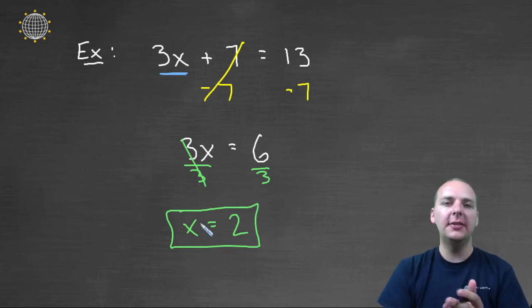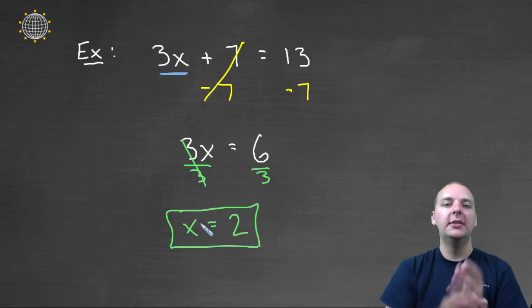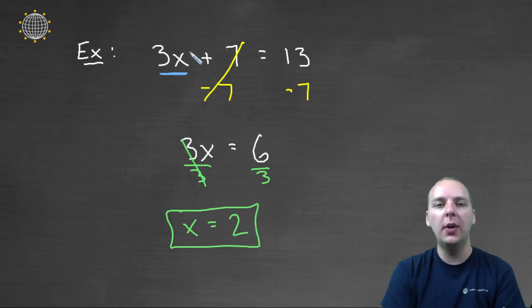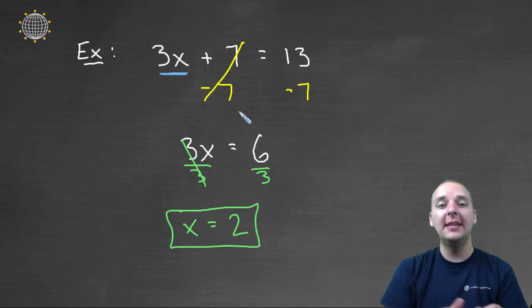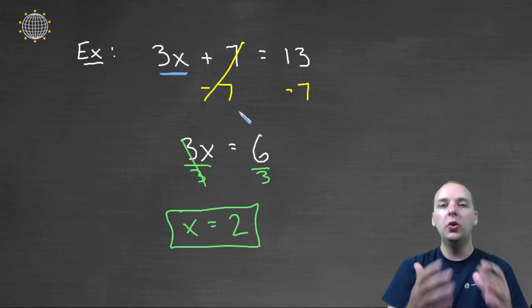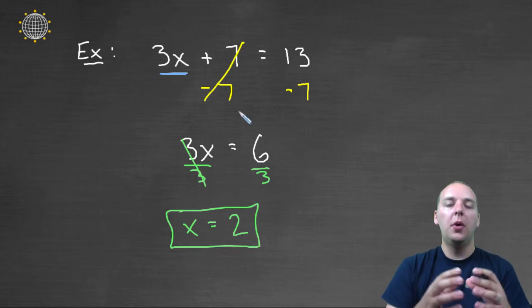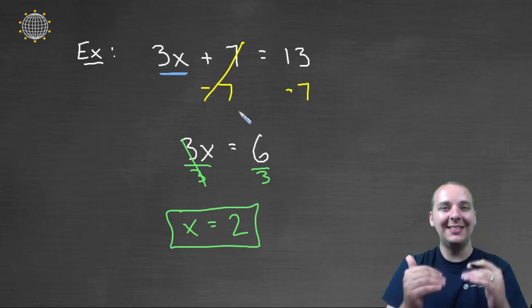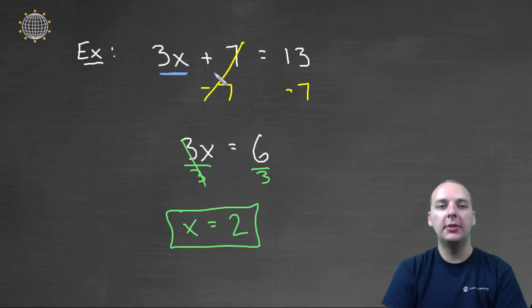Now somebody might look at this, and this happens every time I teach algebra. Somebody says, oh well, I knew the answer was 2, just by looking at the equation. You just think about it, because it's kind of small, and I understand that. That is a very bad habit to get into, because what's going to happen very quickly, is these equations are going to get so large, you won't be able to do that any longer. Naturally we start with smaller equations, just to get our feet wet and practice the algebra, but once the equations get so big, we're going to need to really rely on this systematic approach of how to solve these equations.